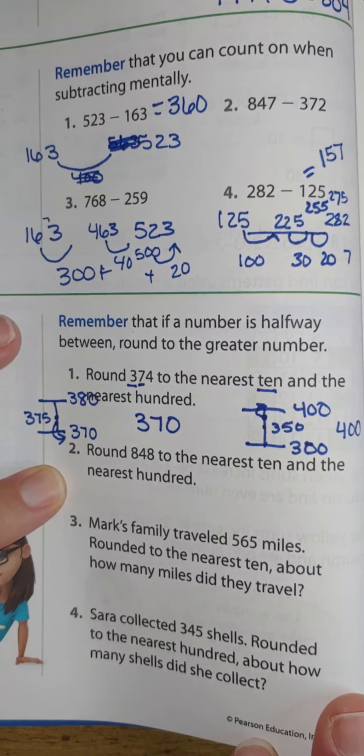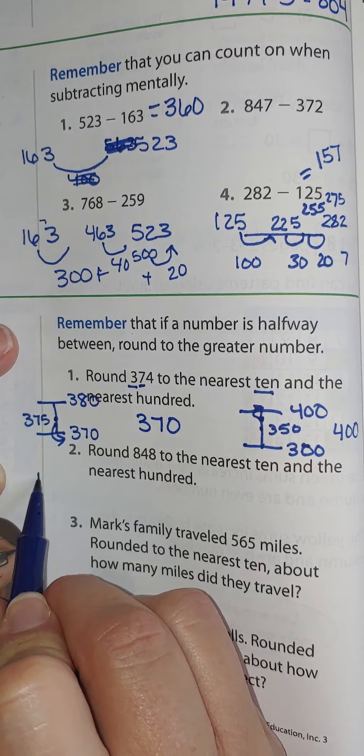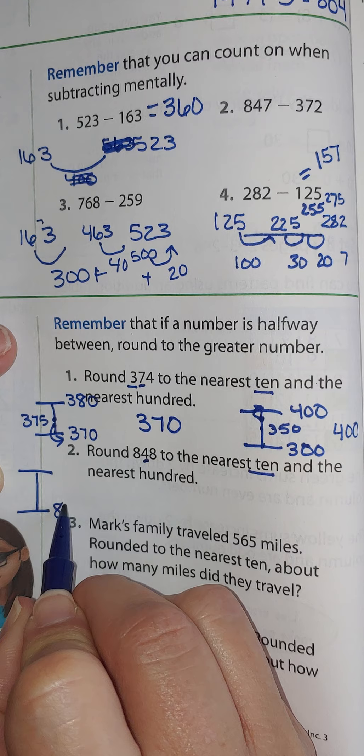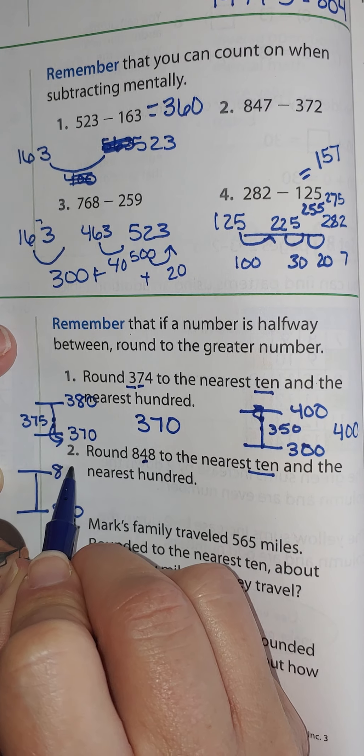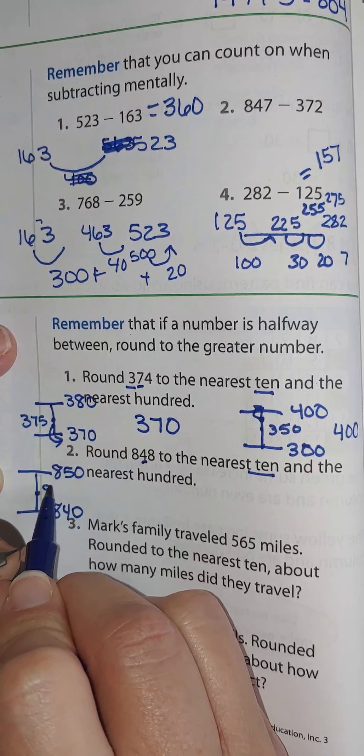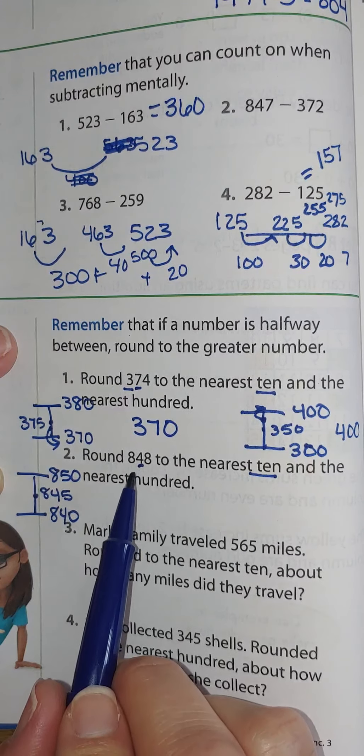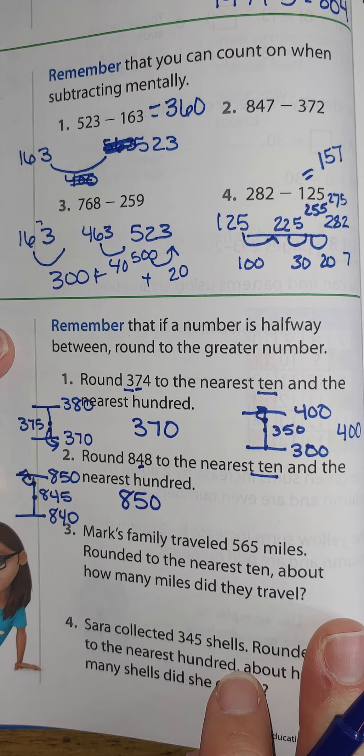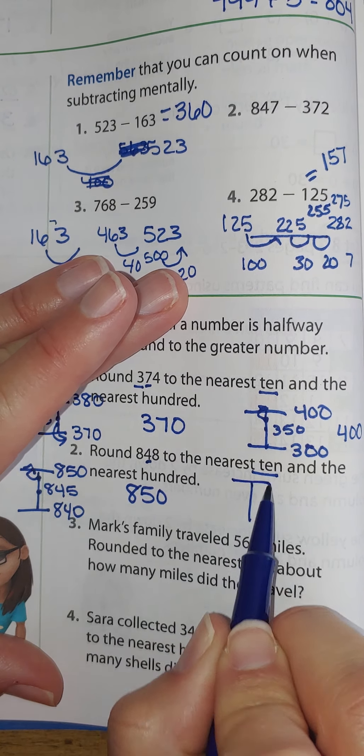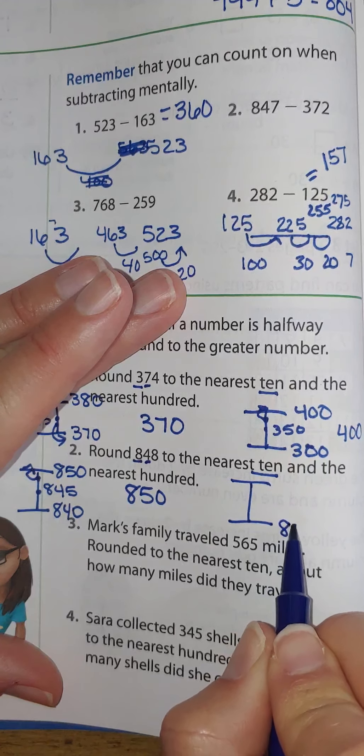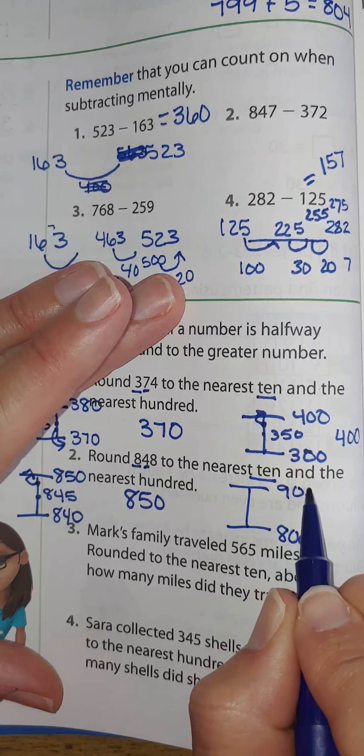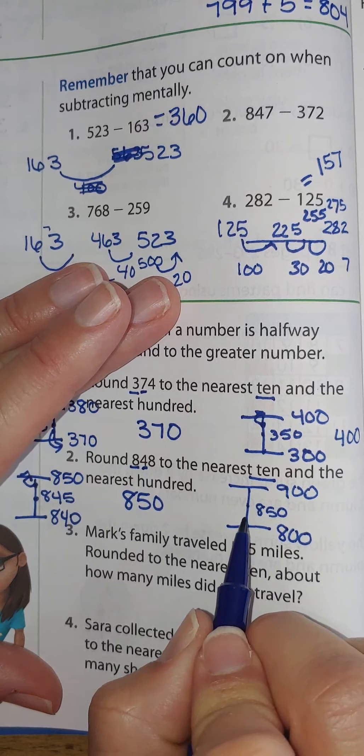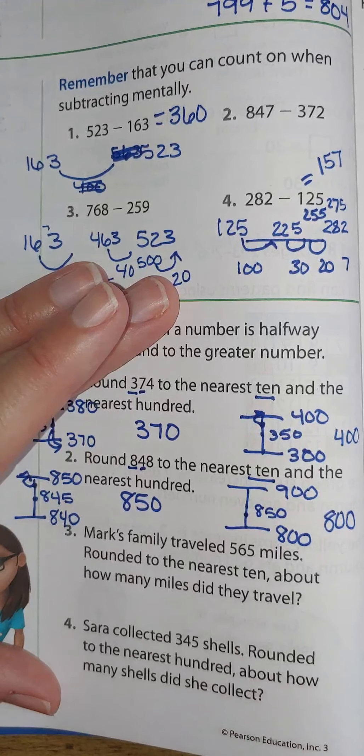Let's do the same for number 2. So I have 848. I'm going to make my vertical number line. Nearest tens. I have 840, 850 because 40 then 50. Halfway through is 845. Place our number, 848, which is closer to 850. And let's round to the hundreds. Hundreds place. I have 8, so 800. I count up another 100, I would get 900. Halfway through is 850. I look. I have 848. So where am I closer to? 800.